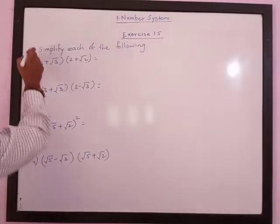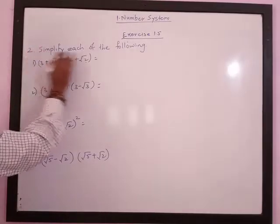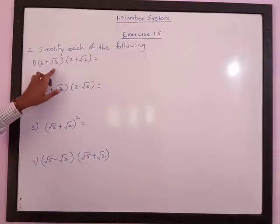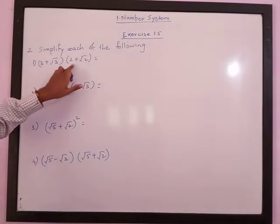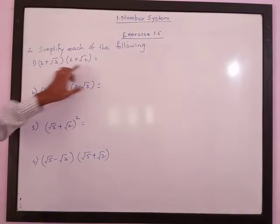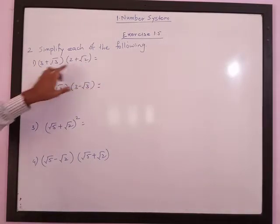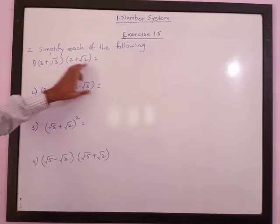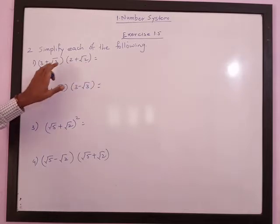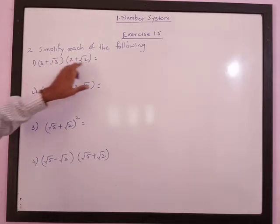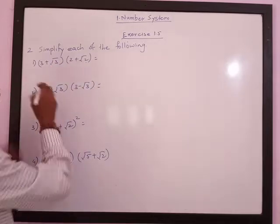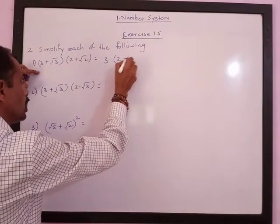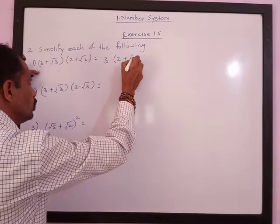The second question is: Simplify each of the following. First: (3 plus root 3) multiplied by (2 plus root 2). This equals the first number multiplied by the second bracket plus the second number multiplied by the second bracket. So this is equal to 3 multiplied by (2 plus root 2).